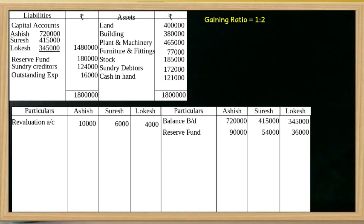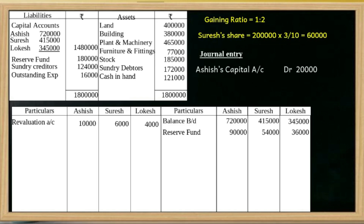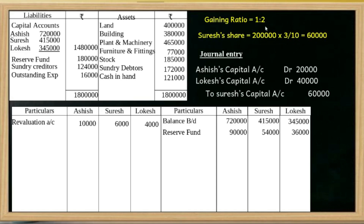Now we will determine the new share of goodwill. The gaining ratio is 1:2. The total goodwill to be credited to Suresh's account is Rs. 60,000, which is distributed between Ashish and Logesh in their gaining ratio.